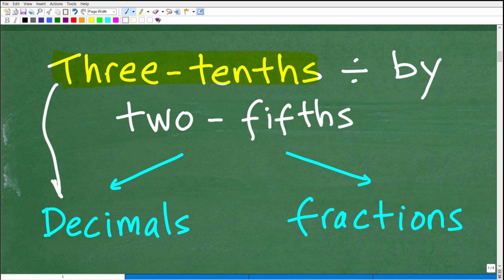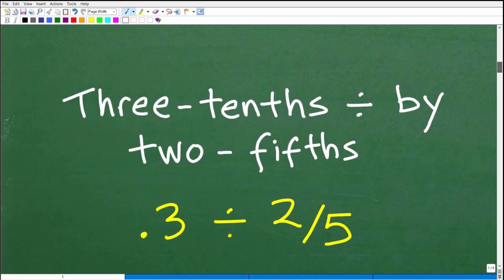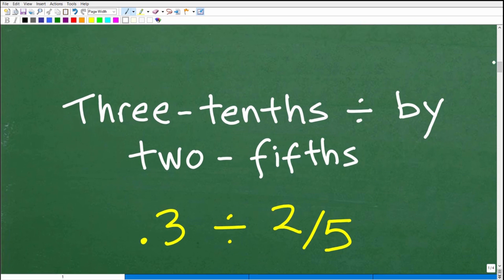You could write 3 tenths as a decimal or you could write it as a fraction, but how about 2 fifths? Well, 2 fifths, you're probably going to think of this as a fraction. So we need to make a decision here. Are we going to work with decimals or fractions?